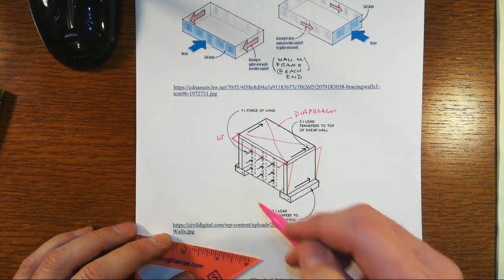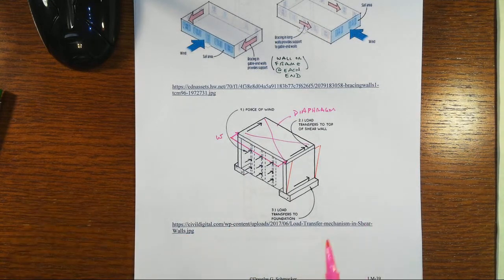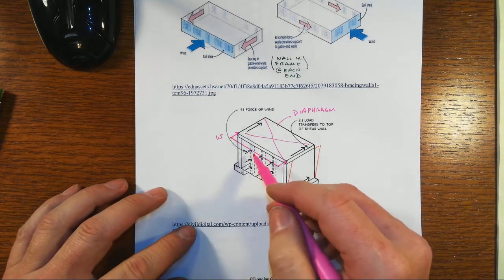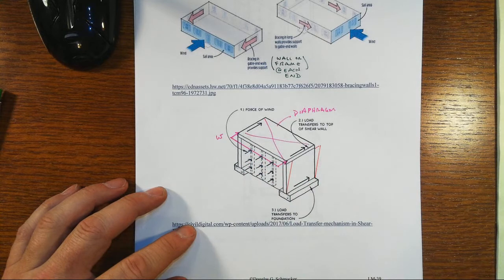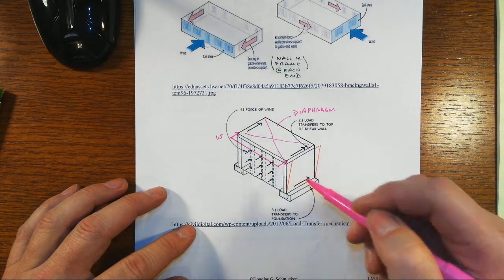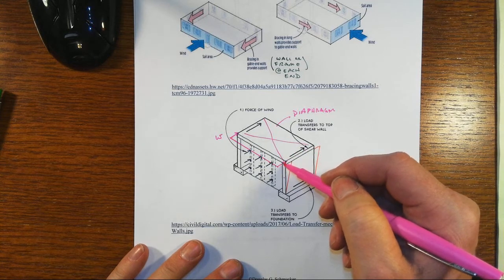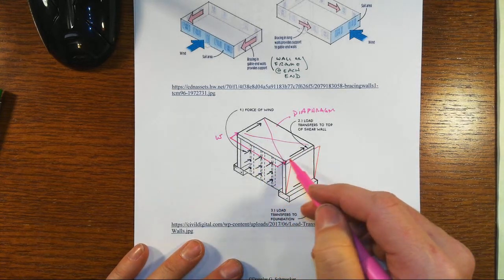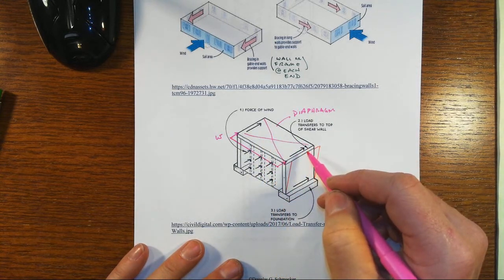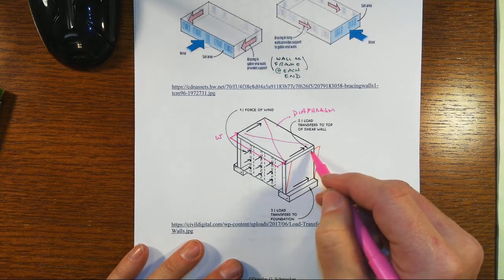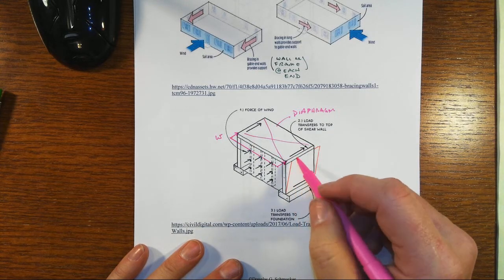So this W there that's on there is just coming from effectively the tributary load that goes up to that, or down if there's a floor above, down to this level.